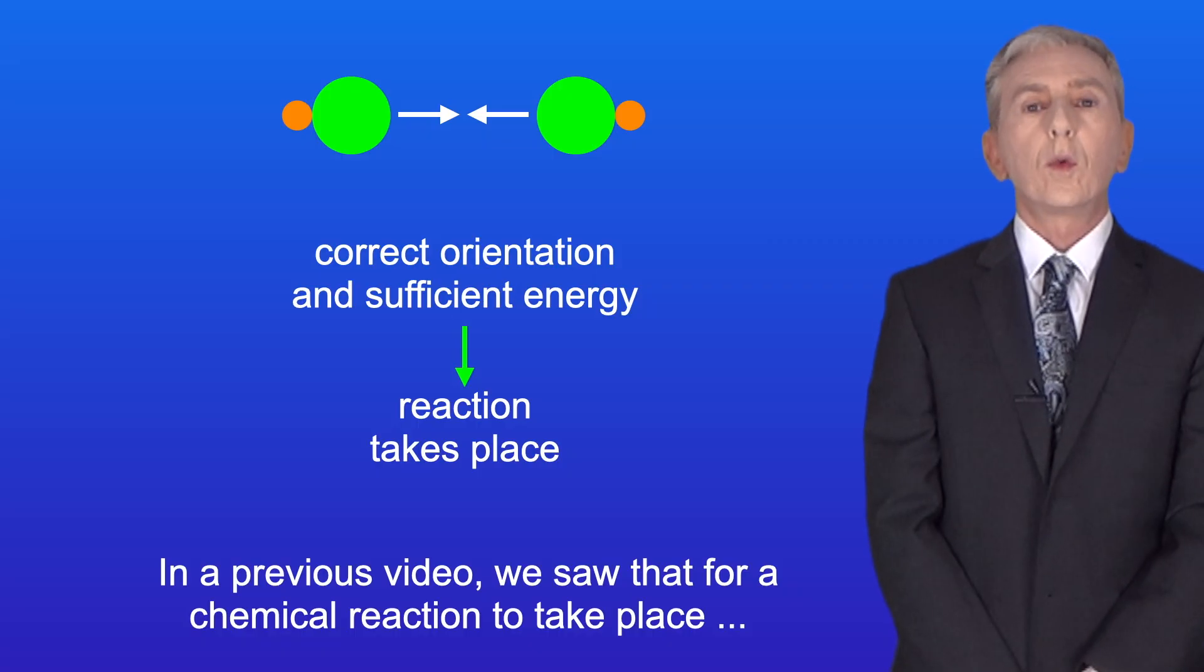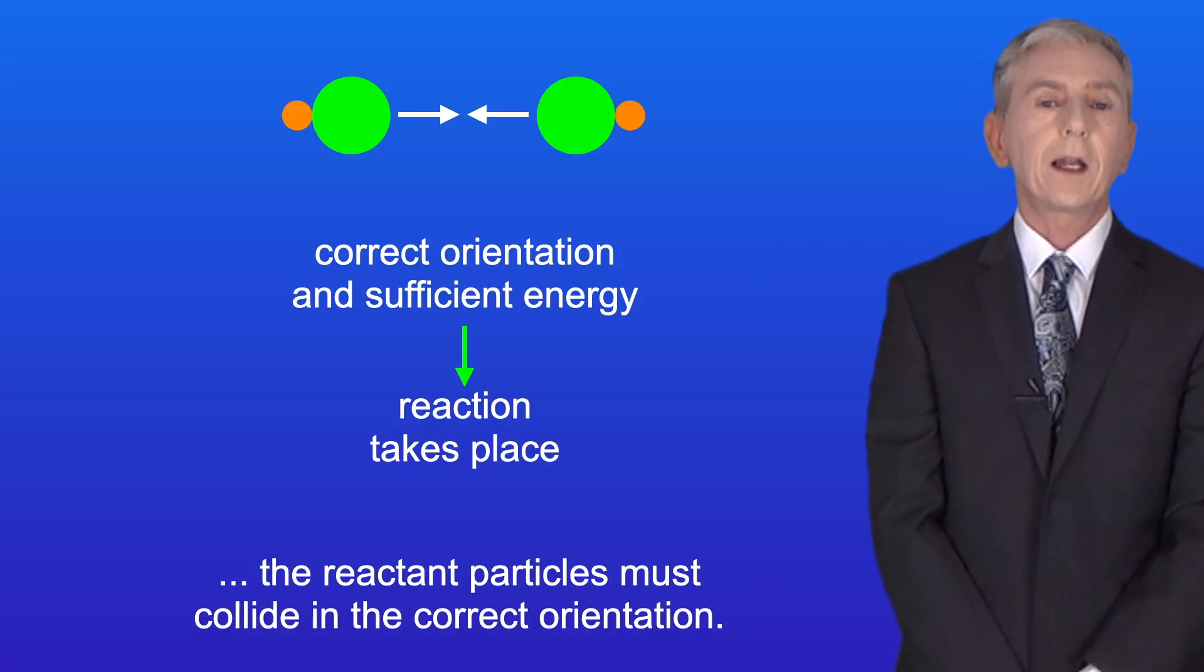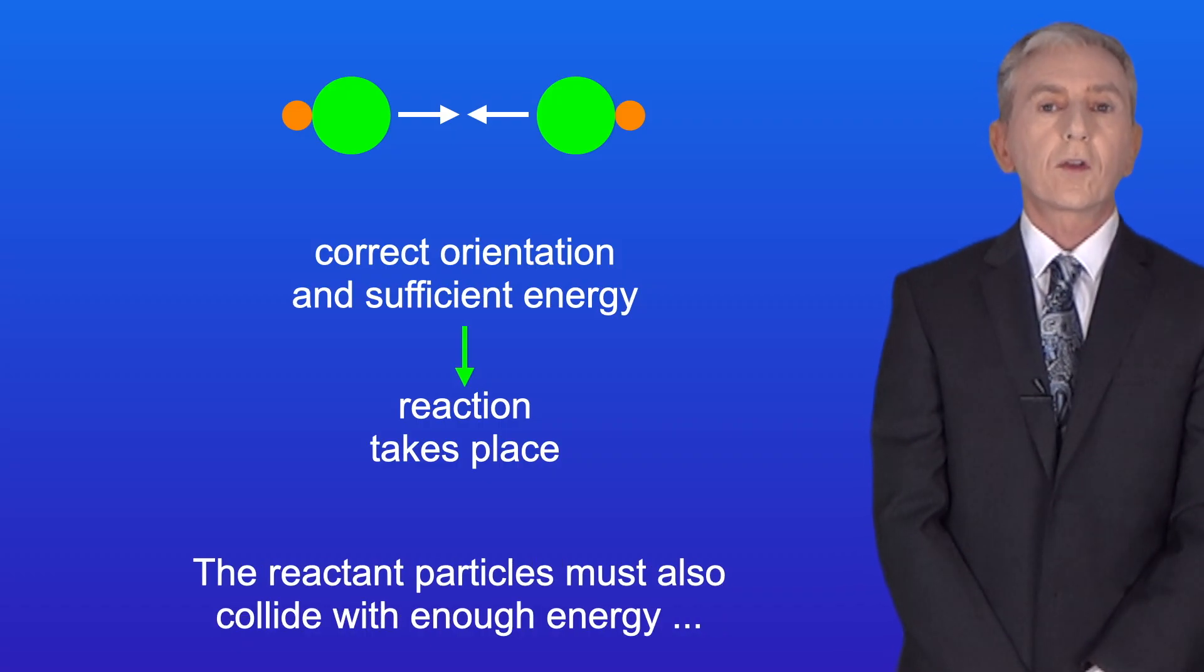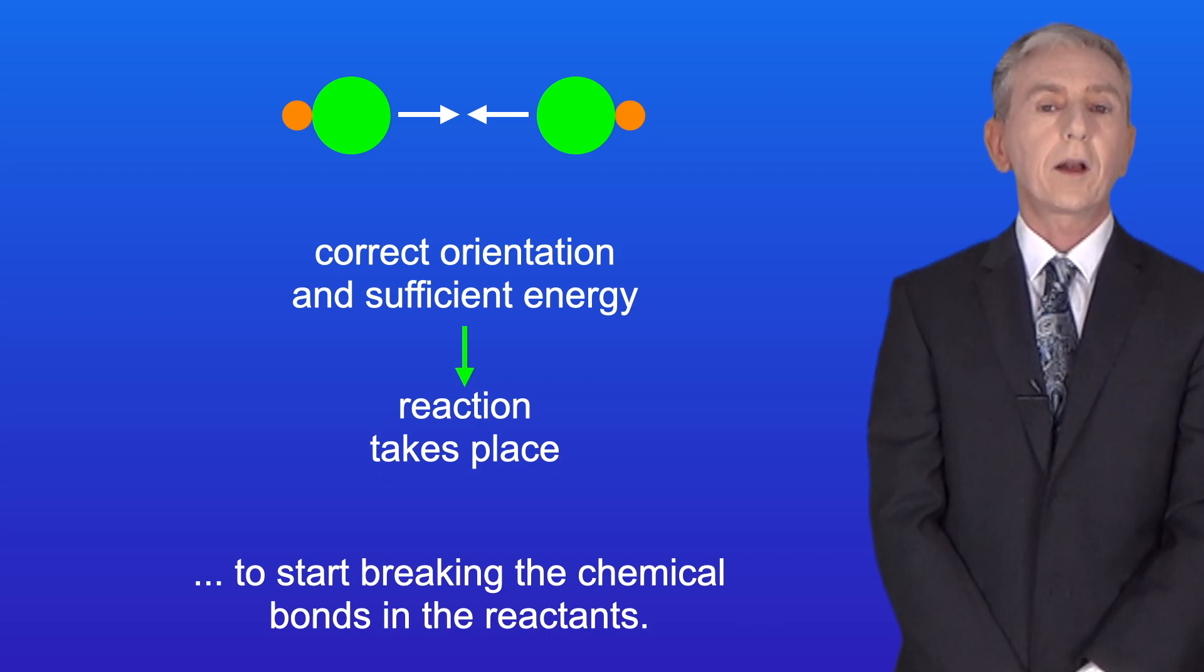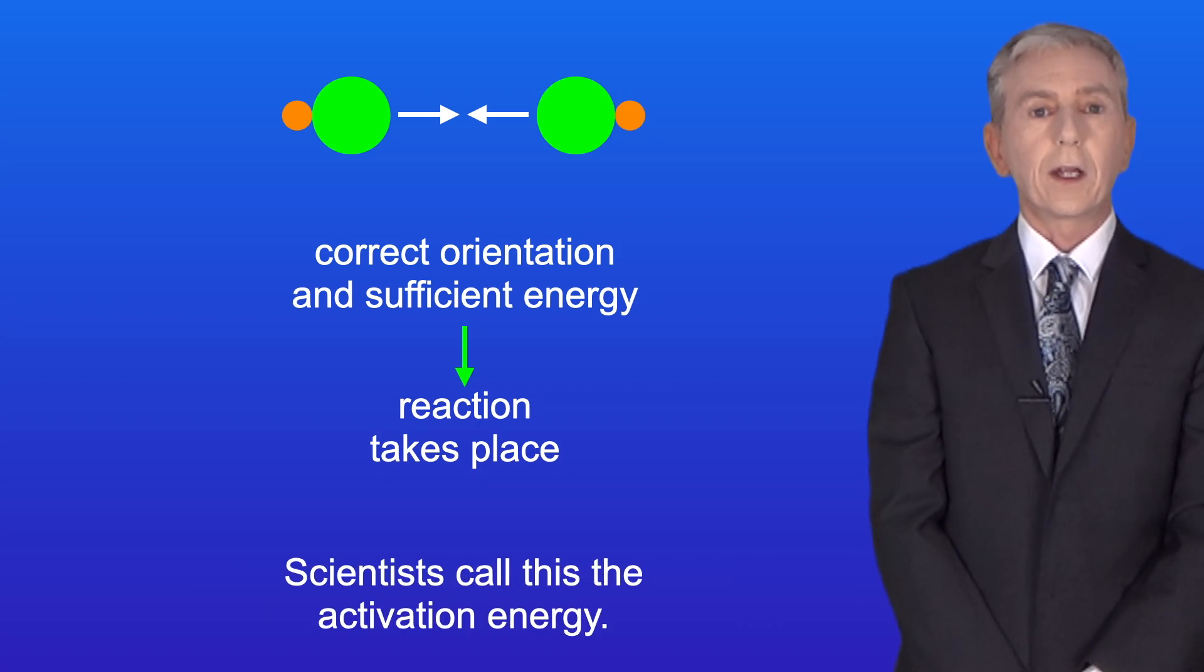In a previous video, we saw that for a chemical reaction to take place, the reactant particles must collide in the correct orientation. The reactant particles must also collide with enough energy to start breaking the chemical bonds in the reactants. Scientists call this the activation energy.